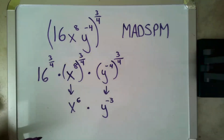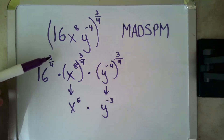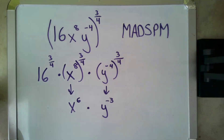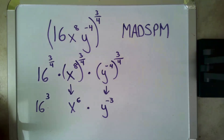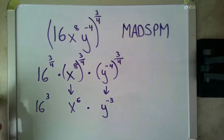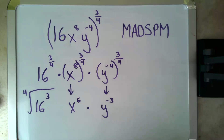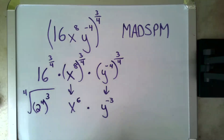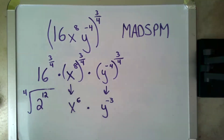Now let's look at what a fractional exponent really means with our 16. When I raise 16 to the three over four, the numerator of the fraction is the exponent I raise 16 to — 16 to the third — and the denominator is the root I'm taking, so it's the fourth root of 16 to the third. What I like to do is rewrite 16 as a smaller power: 16 is two to the fourth. So I have two to the fourth to the third, and when I raise to a power I multiply, giving me the fourth root of two to the 12.